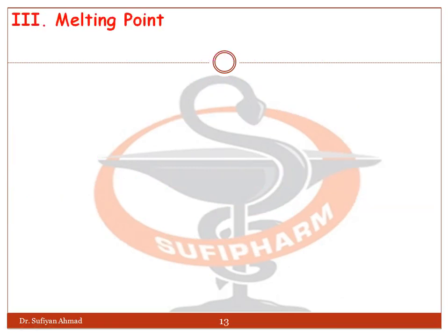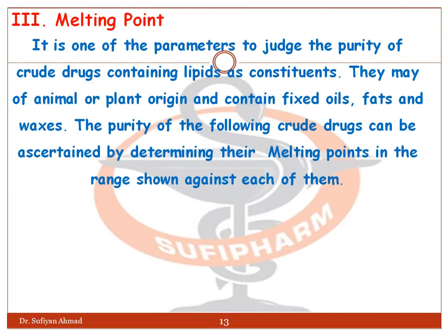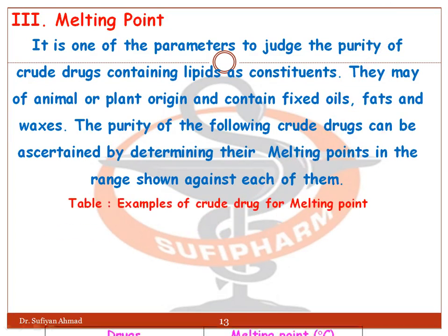The next physical constant parameter is melting point. It is one of the parameters used to judge the purity of crude drugs containing lipids as constituents, which may be of animal or plant origin and include fixed oils, fats, and waxes. The purity of such crude drugs can be ascertained by determining their melting point within the range specified for each drug.